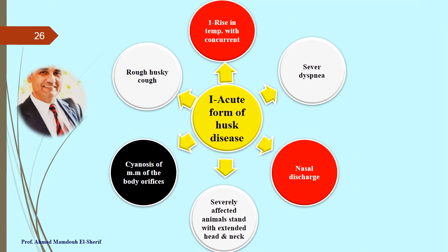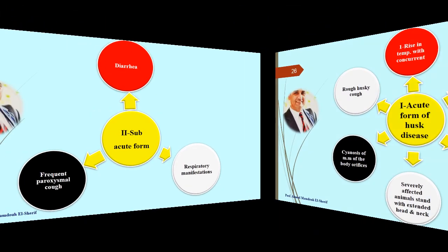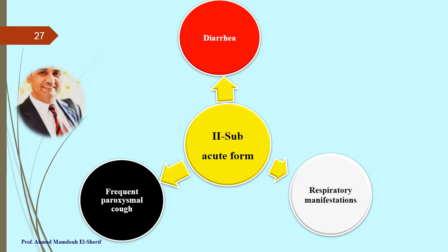Clinical signs — Acute form: the animal suffers a rise in temperature, severe dyspnea, nasal discharge; severely affected animals stand with extended head and neck, cyanosis of mucous membranes and body orifices, and a rough husky cough. Subacute form: the animal suffers from diarrhea, respiratory manifestations, and frequent paroxysmal cough.